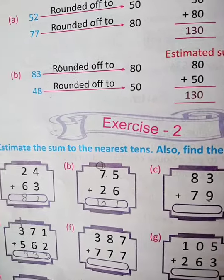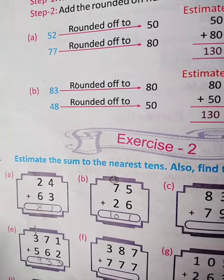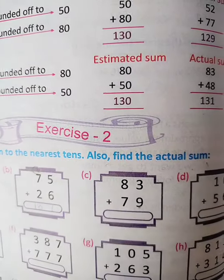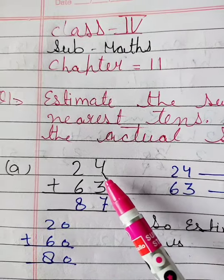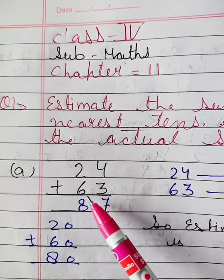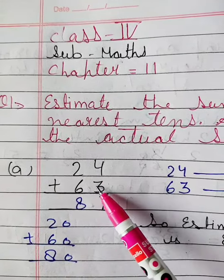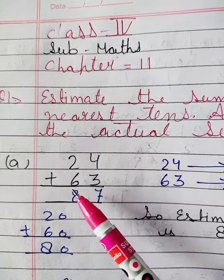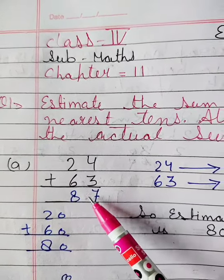Today, we will solve exercise number 2. Estimate the sum to the nearest tens. Also, find the actual sum. Here students, it has given to you 24 and 63. Now, you will add 4 and 3, that's 7, then 2 and 6, that's 8. So here is 87.